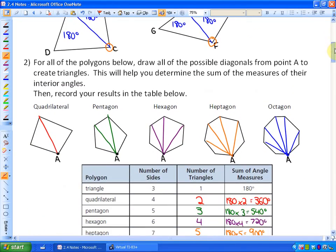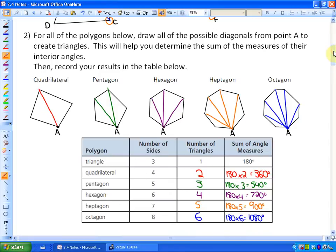Now we're going to extend that knowledge to all polygons. It says, for all the polygons below, draw all the possible diagonals from point A to create triangles. So for quadrilateral 1, what you'll notice is that it creates two triangles, and that's what I say here. So the number of triangles a four-sided object creates is 2, and the angles would be 360, because that's two triangles times 180. A pentagon creates one, two, three triangles, if we draw the diagonals from one point. So that's three triangles for a sum of 540 degrees.